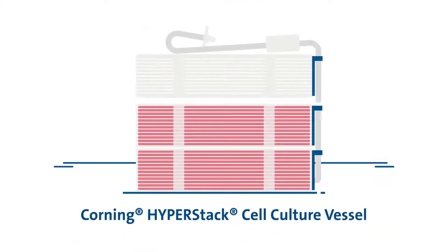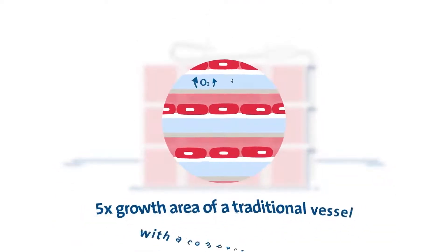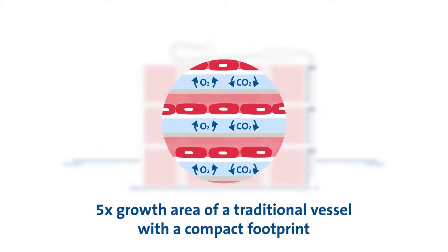How can you effectively scale your cells in a limited footprint? Go modular with the Corning HyperStack. With gas permeable film, this closed system offers more surface area within a compact footprint.